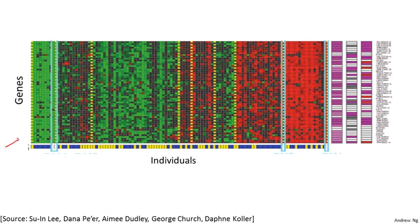So these colors, red, green, gray, and so on, they show the degree to which different individuals do or do not have a specific gene. And what you can do is then run a clustering algorithm to group individuals into different categories onto different types of people. So this is unsupervised learning because we're not telling the algorithm in advance that these are type one people, those are type two persons, those are type three persons, and so on.